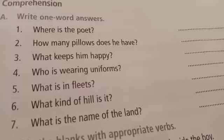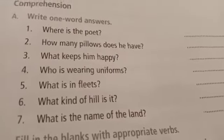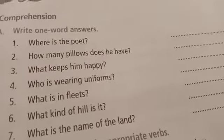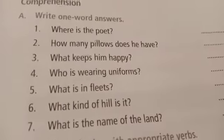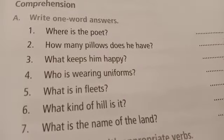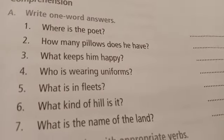Here we have some questions and you have to write the one word answer for each question. Look at question number one: where is the poet? One word answer — bed. Number two: how many pillows does he have? One word answer — two. What keeps him happy? Answer — twice.